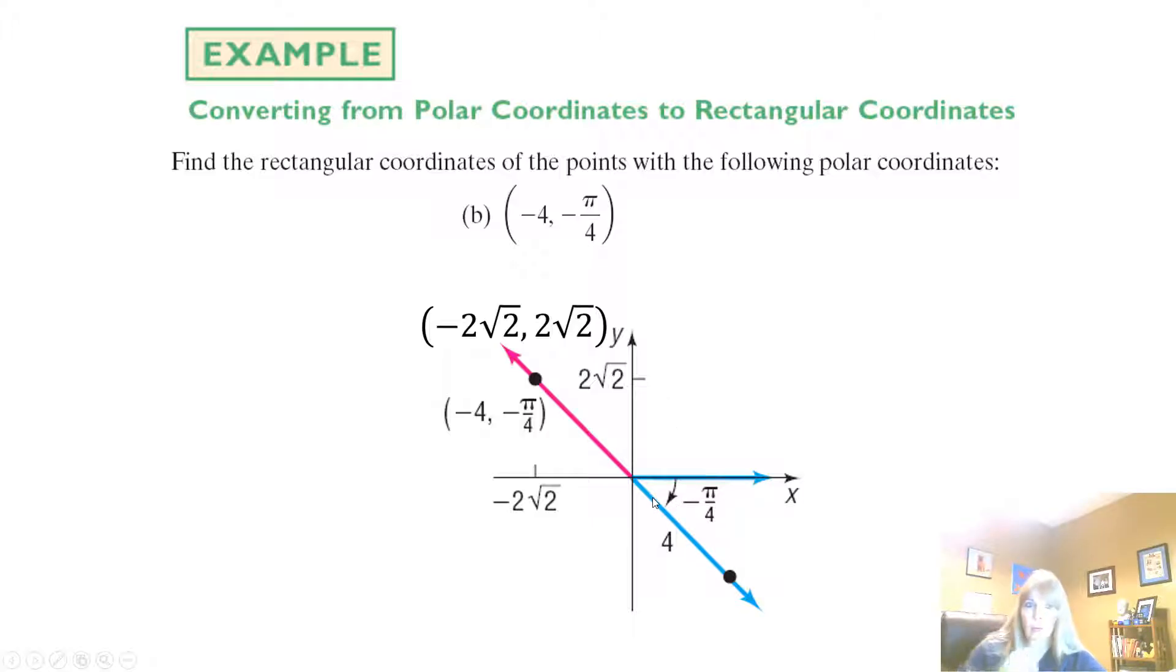Remember, you go clockwise. So this would be negative 45 degrees. And then because my r is negative, I jump to the other side, jump back, right? And so that would be my polar coordinate, which would make sense now why my x is negative, because you can see I'm in quadrant 2. And then certainly my y value is positive.